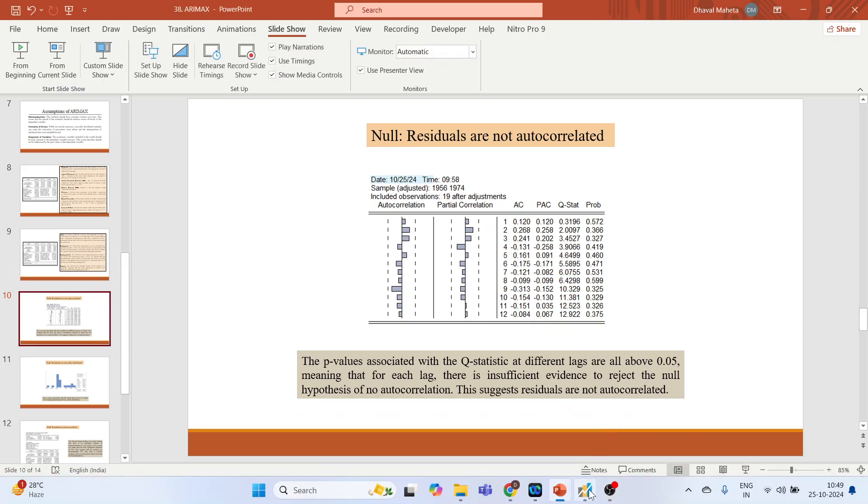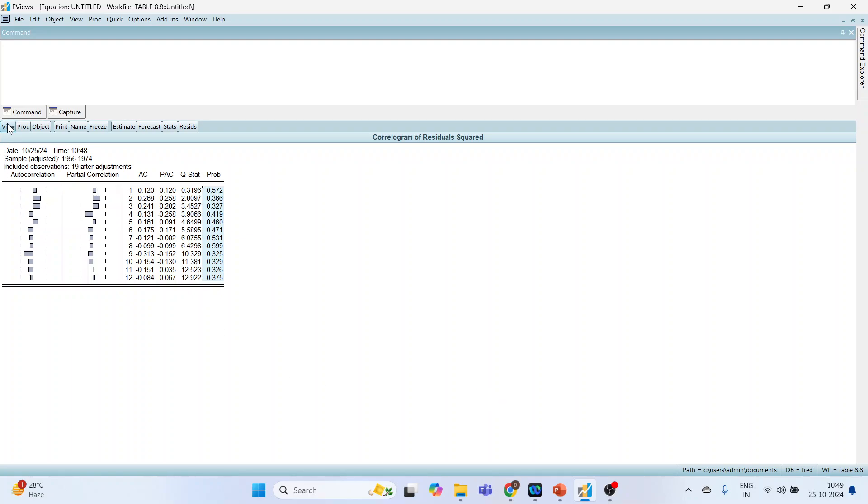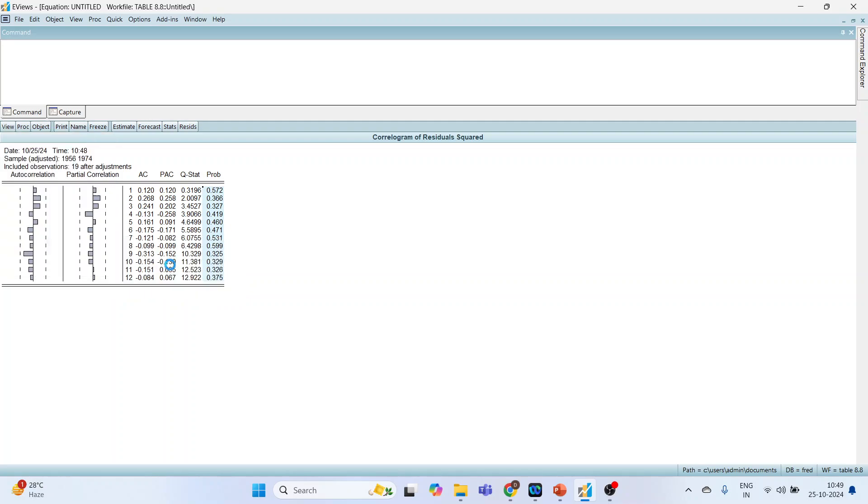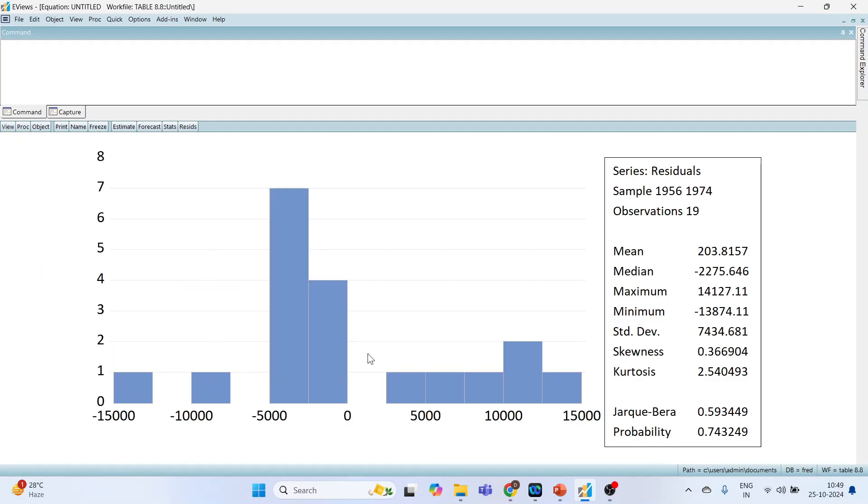Now the next. Again go in View, Residual Diagnostics, Histogram Normality Test. So the normality table, and we have to see the p-value of the Jarque-Bera test. It is 0.743.